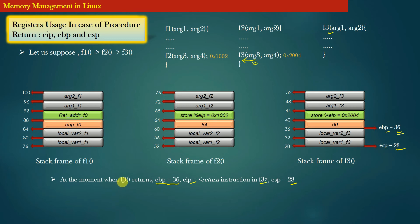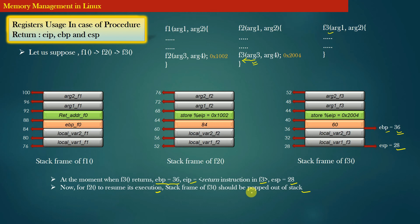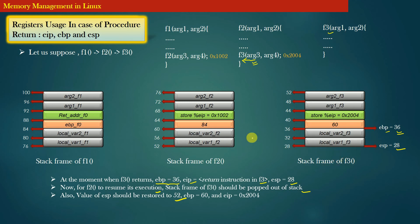When function f3 returns, the stack frame of f3 must be popped — in other words, destroyed — from stack memory. Also, the stack pointer register must be restored to 52, because once the stack frame of f3 is completely destroyed, the bottom-most address of the stack memory will be address 52.